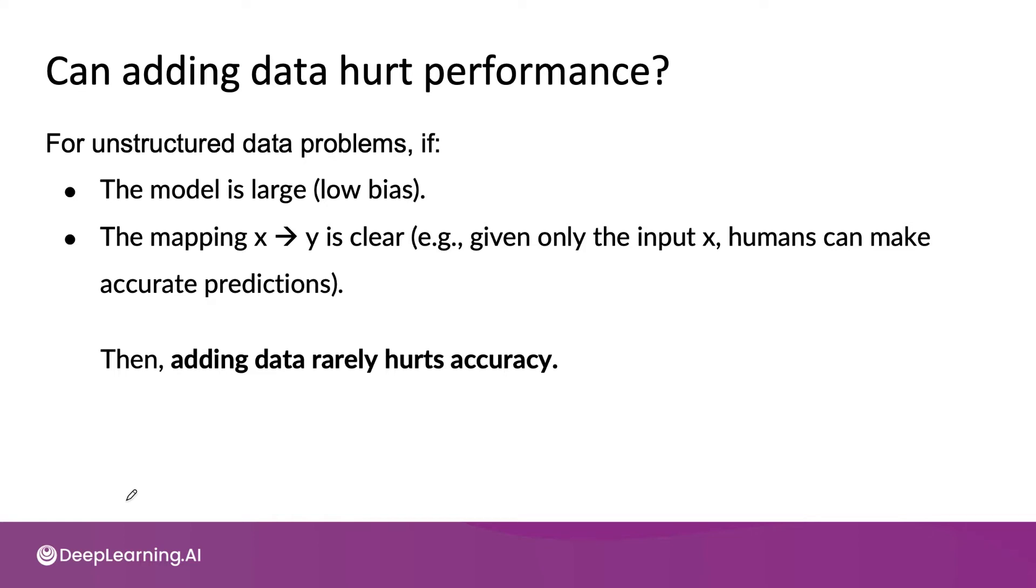This is an important observation because adding data through data augmentation or collecting more of one type of data can really change your input data distribution, the probability of x. Let's say at the start of your problem, 20% of your data had cafe noise, but using augmentation, you added a lot of cafe noise, so now 50% of your data has cafe noise in the background. It turns out that so long as your model is sufficiently large, then it won't stop it from doing a good job on the cafe noise data, as well as doing a good job on non-cafe noise data.